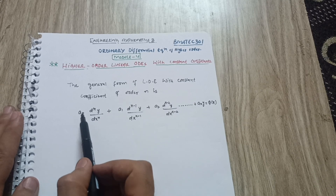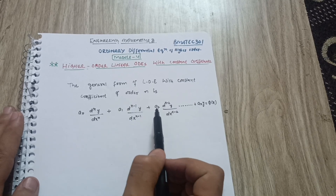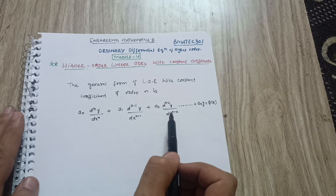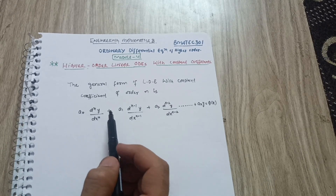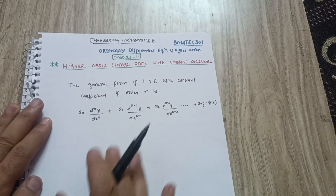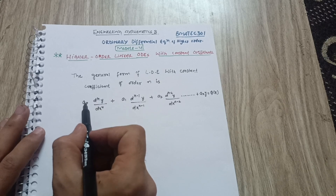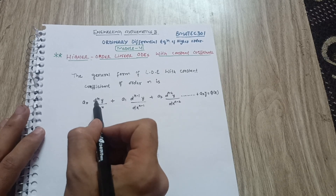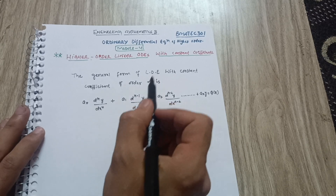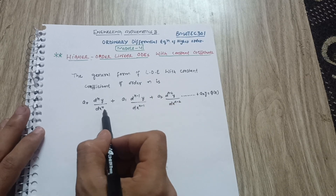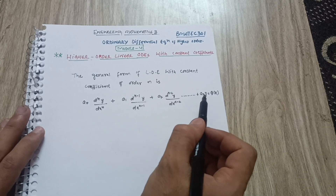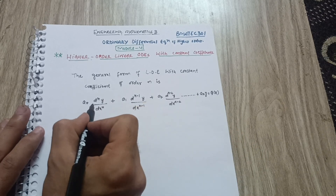Continuing: + a₂ · (dⁿ⁻²y/dxⁿ⁻²), and so on. You don't need to memorize this equation — I will tell you later which equation to use in your questions. The pattern goes: a₀, a₁, a₂ with Dⁿ, Dⁿ⁻¹, Dⁿ⁻², and so on for the higher-order terms, ending with + aₙ · y = Q(x).